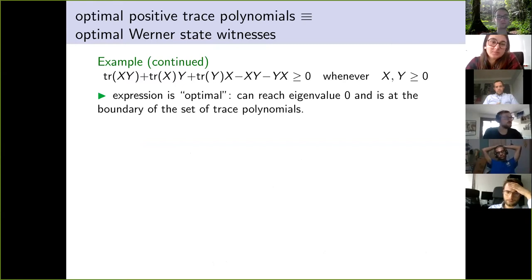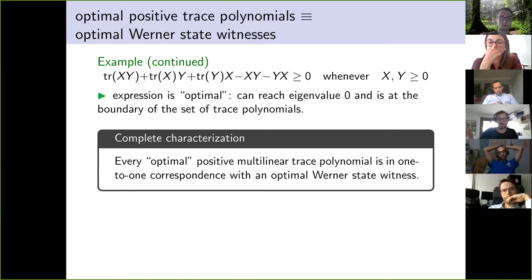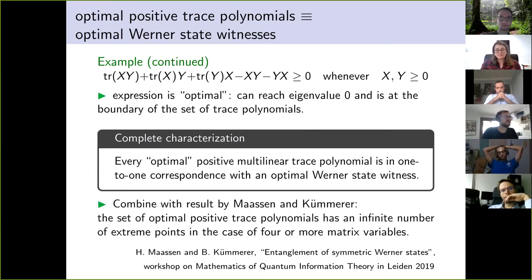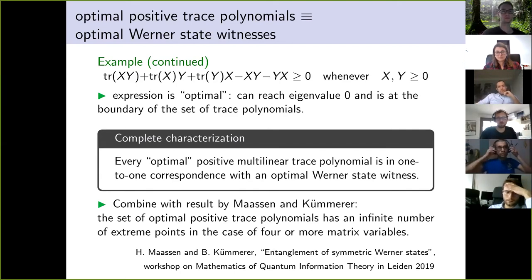This expression is optimal: it can reach eigenvalue zero, and it lies on the boundary of the set of positive trace polynomials. The same method gives a characterization of all optimal positive multilinear trace polynomials — they are in a one-to-one correspondence with optimal Werner state witnesses. So every Werner state witness can immediately be translated into a trace polynomial inequality for the positive cone. Combined with results of Mozrzymas and collaborators, the set of optimal positive trace polynomials has an infinite number of extreme points for four or more matrix variables, showing that this set is very complicated.